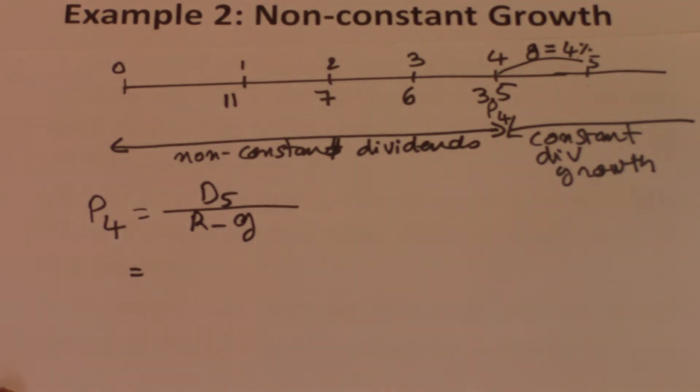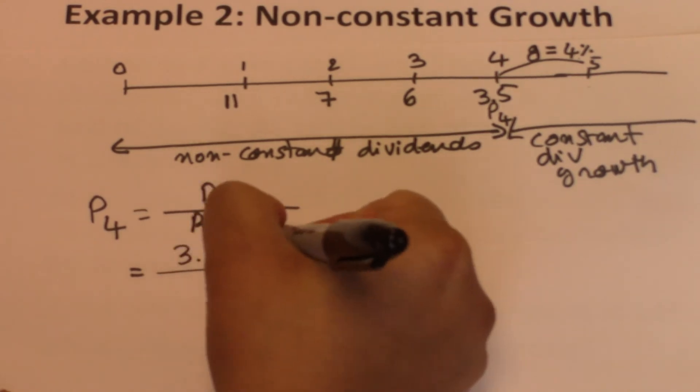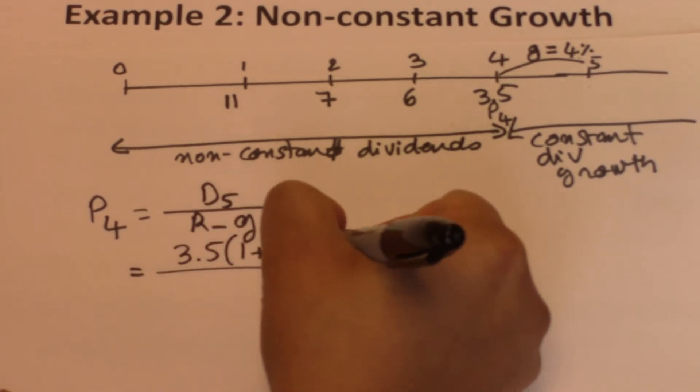To determine D5, we look at the dividend at the end of year 4. We are getting $3.5 at the end of year 4. That dividend is going to grow at 4% for the next year. So, we take 3.5 and multiply by 1 plus 0.04.